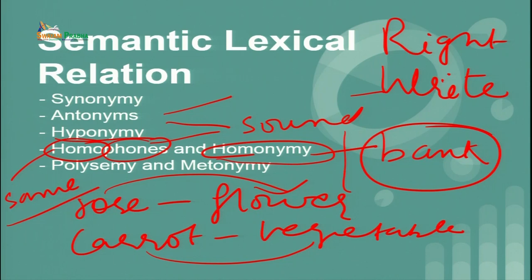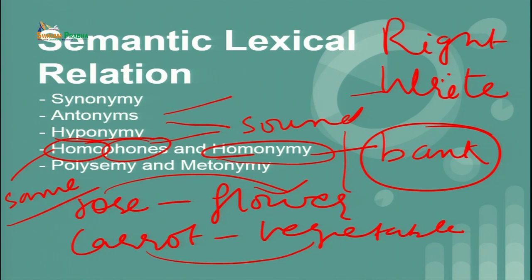When one form has multiple meanings all related by extension, it is called polysemy. For example, 'head' can mean the top of the body or the head of a company — you extend by giving multiple related presentations. Metonymy is a type of relationship between words based on close connection in everyday experience. For example, 'car' and 'wheels,' or 'king' and 'crown' — king and crown share a relationship of metonymy.